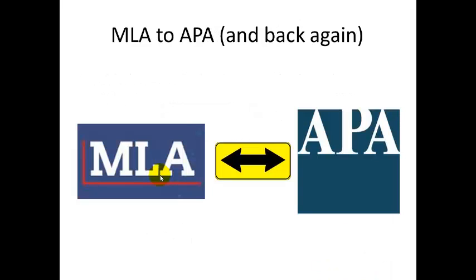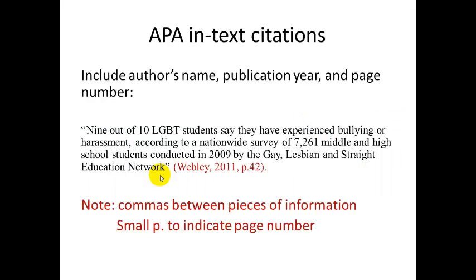So that's MLA. What if your professor told you to write the paper in APA instead? This would not be a reason to panic — it would just take a few minutes to reorganize the paper, because MLA and APA are not all that different. They include a lot of the same information, but there are some differences. APA in-text citations include the author's name, the publication year, and the page number. So this is a little bit different from MLA, where we just had the name and the page number.